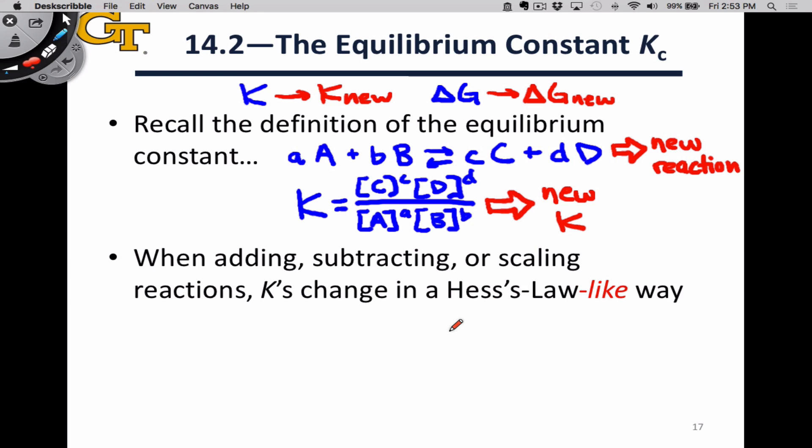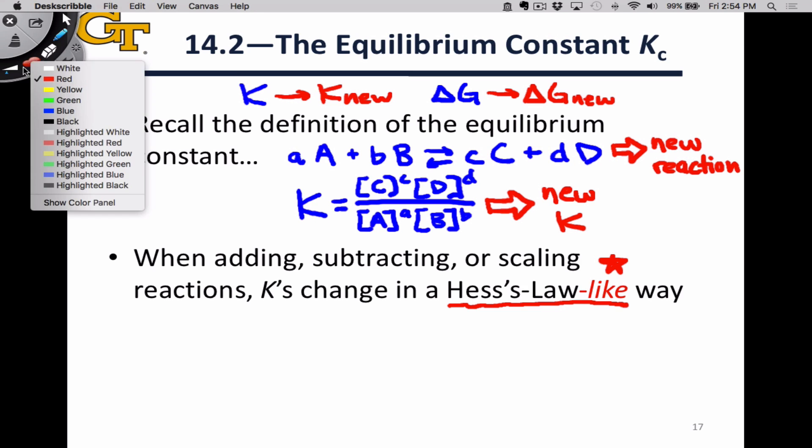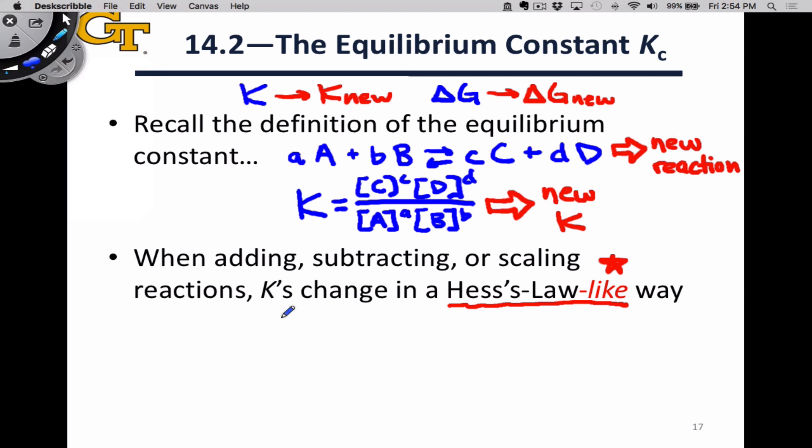And so, just like we can transform delta H's and delta G's according to Hess's law, we can transform equilibrium constant values in a Hess's law-like way. And I use the word like here because it's not exactly the same and it's not quite as simple. When you apply Hess's law, for example, if you add two reactions, you simply add their enthalpy changes, right? That's not exactly what's going on here. But it's similar, and I hope you'll see that here in a second.